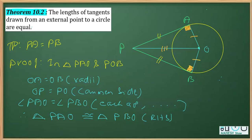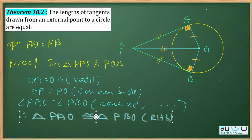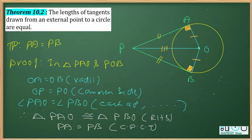Once we prove the two triangles congruent, we write that PA equals PB. The reason is CPCT — corresponding parts of congruent triangles. That is how we prove this theorem, and the theorem is proved.